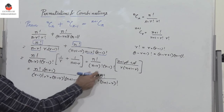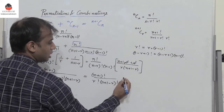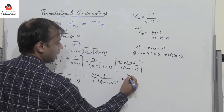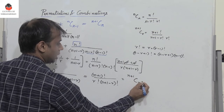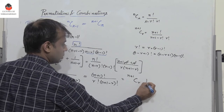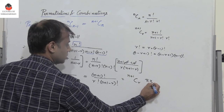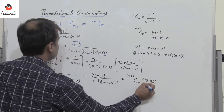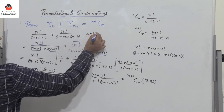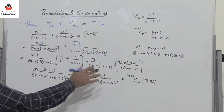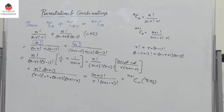So this equals N+1CR, which is equal to the RHS. We have thus proved that LHS equals RHS — a very simple proof.